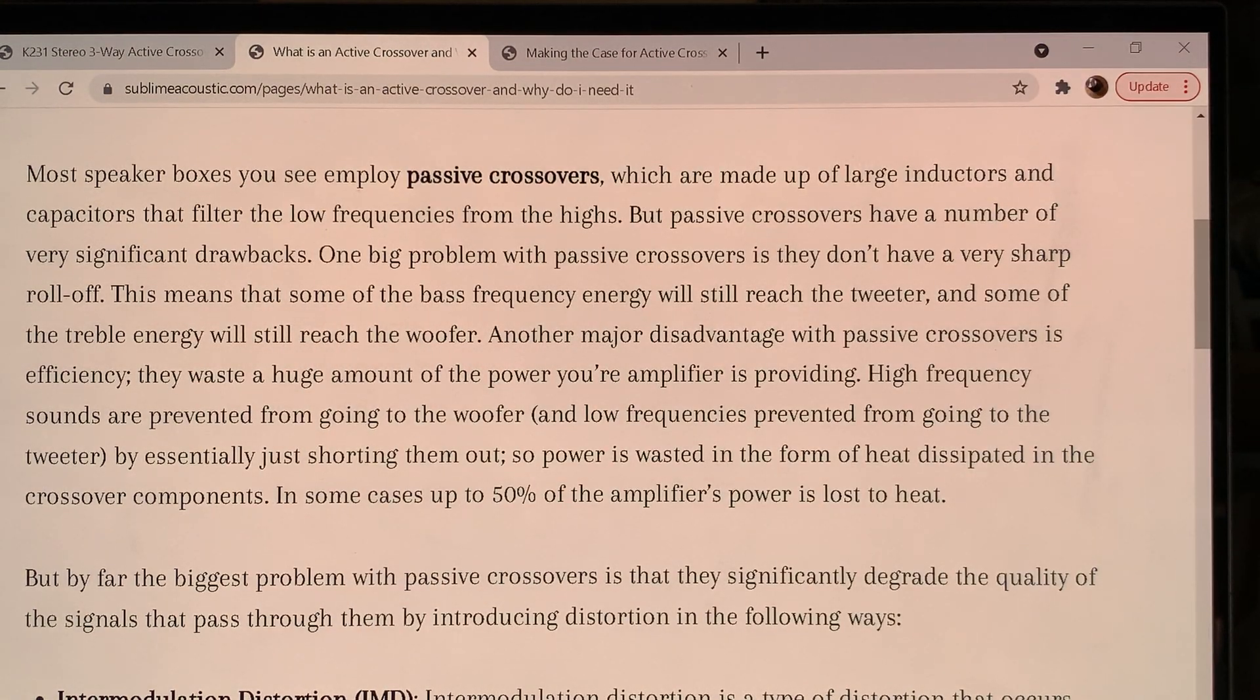Most speaker boxes employ passive crossovers, which are made up of large inductors and capacitors that filter the low frequencies from the highs. I have to add that when we talk about large inductors and capacitors, it can mean two things. One of them is large inductance, which means high value inductors like 10 mH or 20 or 100 mH, or a capacitor is a high value capacitor if it's like 50 microfarad or 100 microfarad. That's where we are starting to see problems. If the value is too high, then that element will really modify the sound and have a really big impact on your sound.